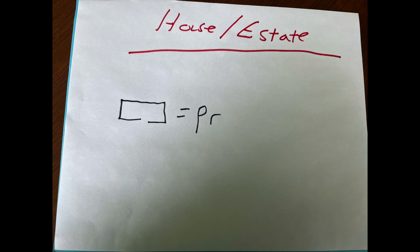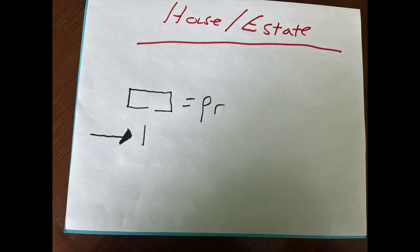the ideogram for house estate is per, with the actual drawing of a house. It can be used as the sound per, like if you were writing the word prune. You can use the pr, or simply by putting a stroke line under the glyph, it becomes an ideogram or a determinative.